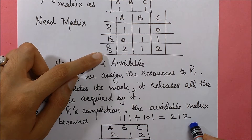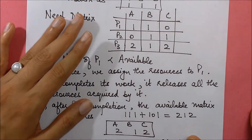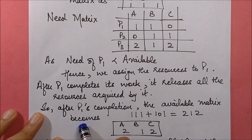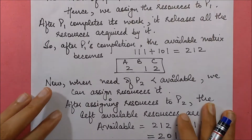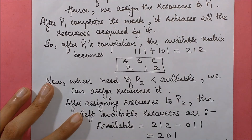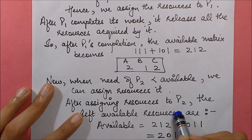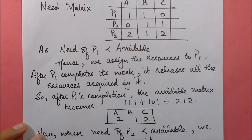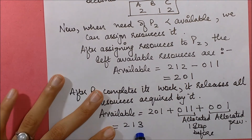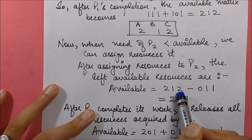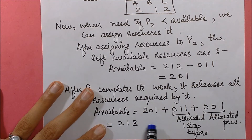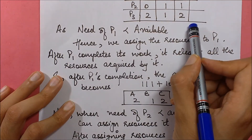We can assign to any one of them and still yield a safe sequence, so there are multiple safe sequences possible. If we assign to P2 next, after P2 completes we add its allocated resources — only one unit of resource C was allocated to P2 — so the available becomes [2, 1, 3]. You can verify this by deducting the required need from available, then adding back the allocated.